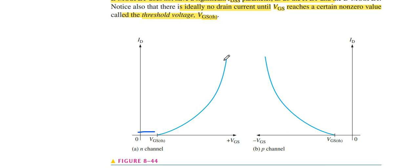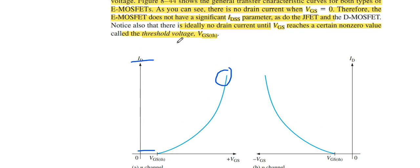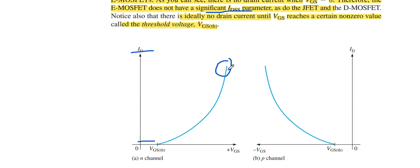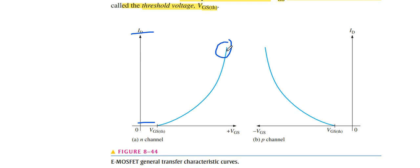So as VGS threshold increases, ID increases. There is now a certain value of ID where we get the IDS, the significant parameter of IDS.